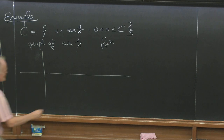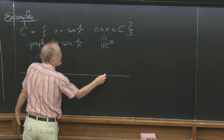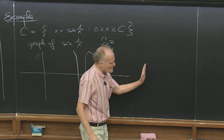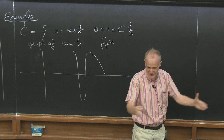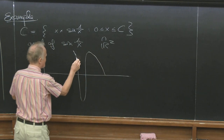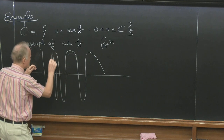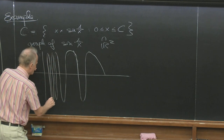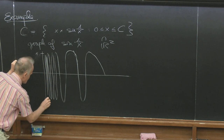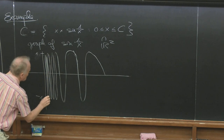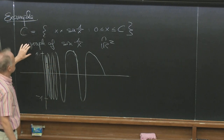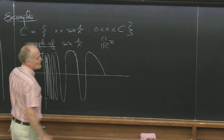How does it look? It starts somewhere and then the sine — if you go here, you go this way. And now it's condensed — all this in this part. It goes here and all these infinitely many oscillations. Here we have 1, here we have minus 1, and they approach this. That's the graph of sin(1/x).